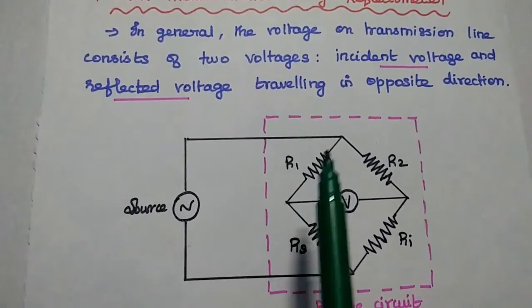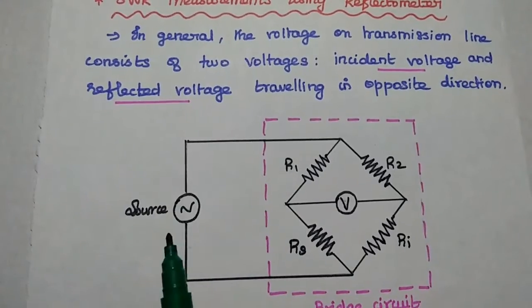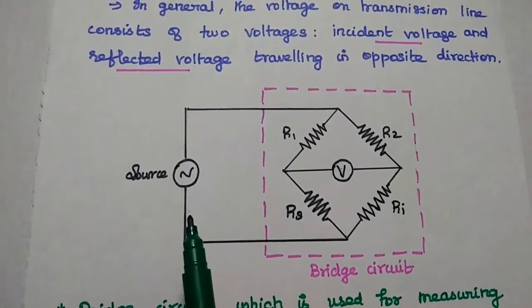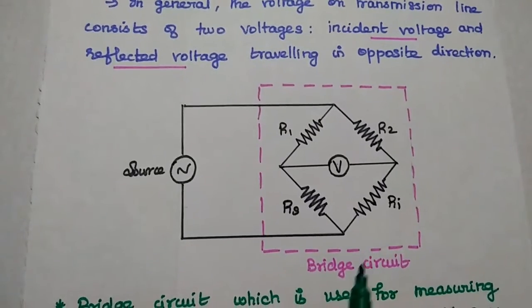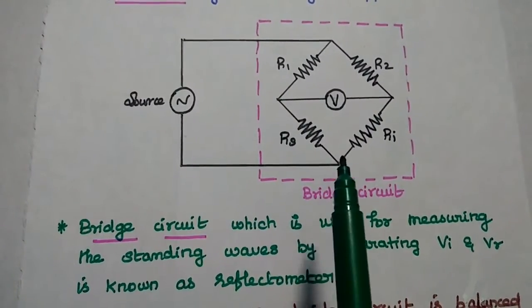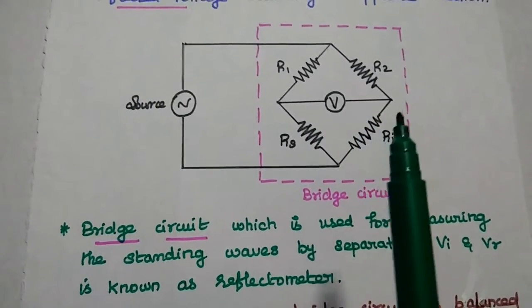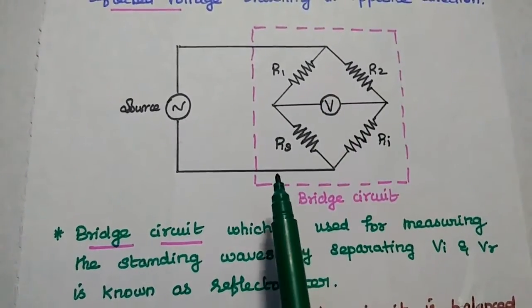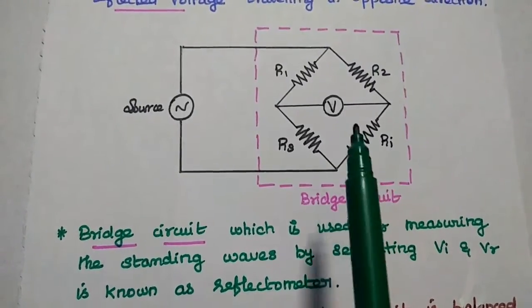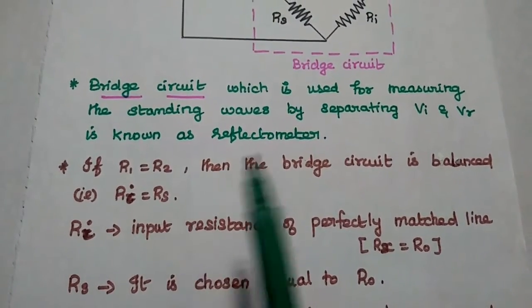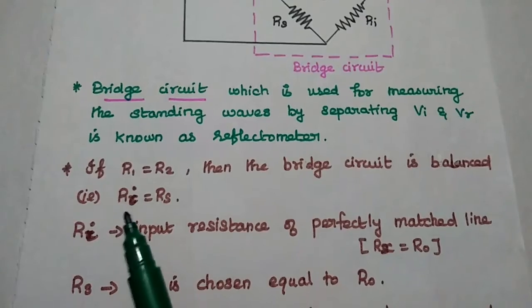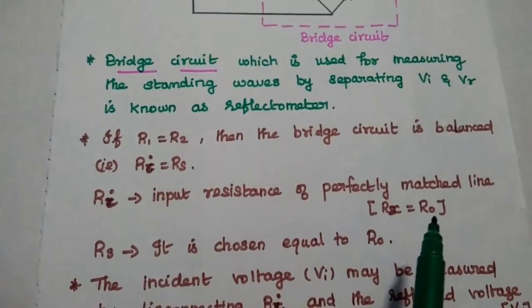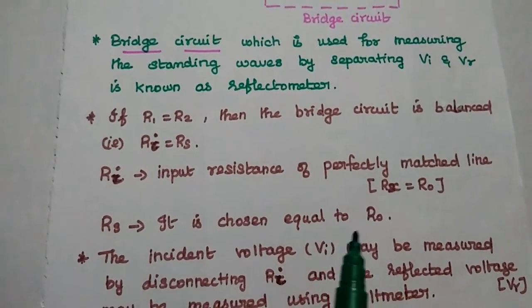Here we use a bridge circuit to separate the incident voltage. The reflectometer consists of a source, voltmeter, and one bridge circuit. This bridge circuit is used for measuring the standing waves by separating the incident voltage and reflected voltage. In this bridge circuit, if R1 = R2, then RS = Ri — that is the balanced circuit. Ri is the input resistance of the perfectly matched line, equal to the characteristic impedance R0. Similarly, RS is also equal to R0.